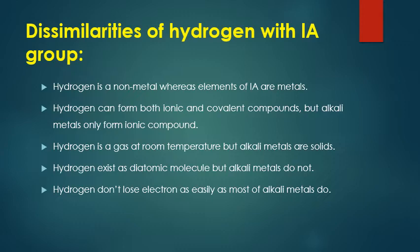The second difference: hydrogen can form both ionic and covalent compounds. As we learned in the topic of hydrides, there are ionic hydrides, covalent hydrides, and polymeric hydrides. So hydrogen has the property of forming both ionic and covalent compounds. But alkali metals do not — alkali metals form only ionic compounds. The third difference: hydrogen exists as a gas at room temperature — H₂ — whereas alkali metals like sodium, potassium, and lithium are solid.